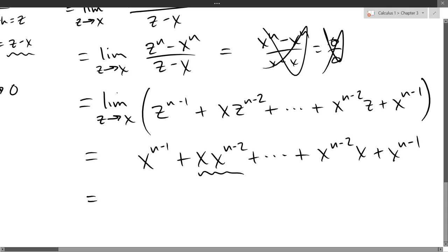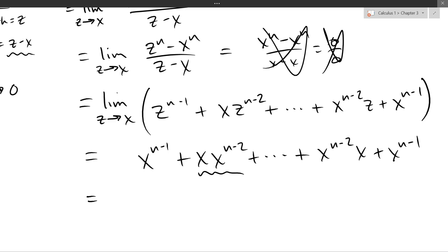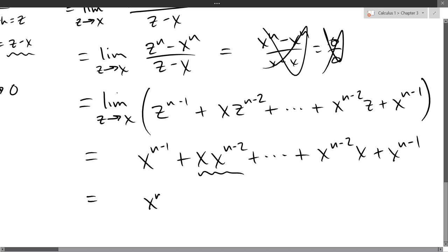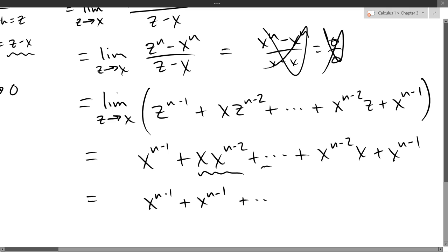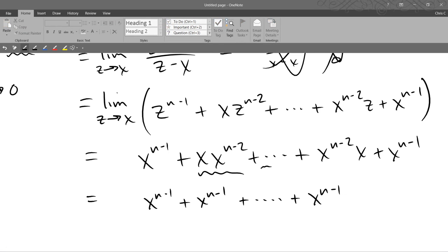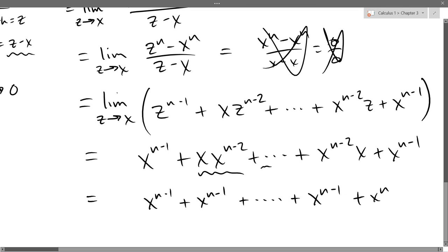So what is x times x to the n minus 2? Yep, x to the n minus 1 is just adding one more x, one more power in there. Now what would have come next right here would have been an x squared times x to the n minus 3. So add those two together, those powers, and you get x to the n minus 1, et cetera, et cetera, plus x n minus 1. Nope, I had that right. So we're combining those two together. That's x to the n minus 1 plus another x to the n minus 1.